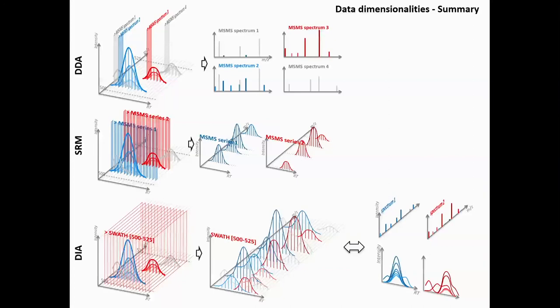To summarize the precursor isolation dimensionality: in DDA, we have stochastic selection that is discontinuous in both retention time and mass dimensions, but you get many snapshots and can identify a lot of things. In SRM, we have continuous measurements in the retention time dimension but discontinuous in the mass dimension — you can quantify a small number of things but not all peptides simultaneously. In DIA, if you increase the precursor isolation window and co-isolate all peptides at once — accepting complex mixture MS2 spectra — you can cover the whole mass-to-charge space and be continuous in both dimensions.